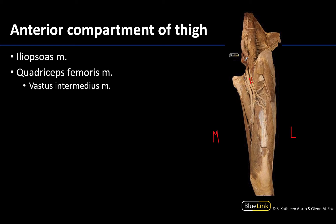Let's try to identify the iliopsoas. You can see the muscle belly a lot easier looking around the vertebral or pelvic region where they are the psoas major and the iliacus muscles. This is psoas major right here, and a bit of the iliacus right here. They combine to form the common tendon, so right around this region you're getting into the iliopsoas. Note that the sartorius has been cut in this image to get a better view of this whole region, and the rectus femoris has also been cut and removed right here.